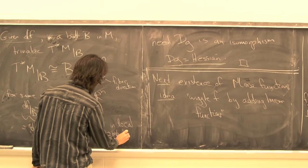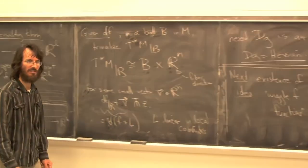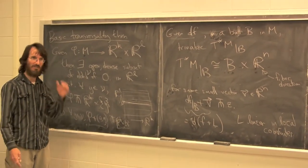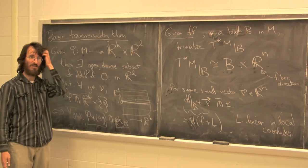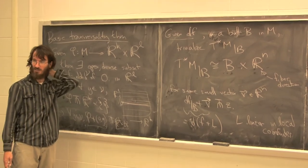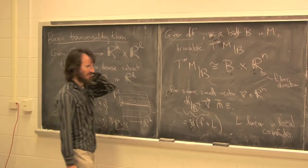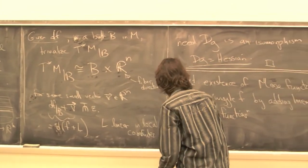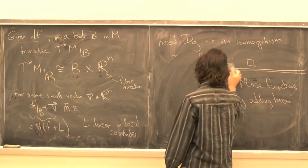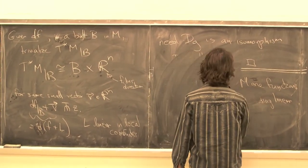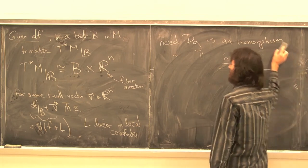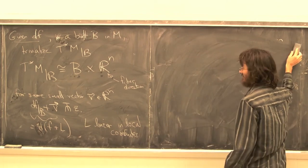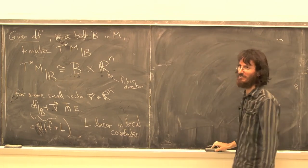If I'm willing to add a linear function to f on this ball, I can make it transverse and achieve the existence of Morse functions. But the problem is that a linear function gets bigger and bigger outside this ball. So I need to cut it off with a bump function.